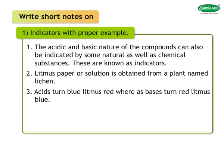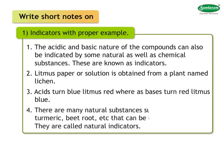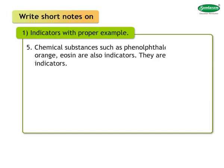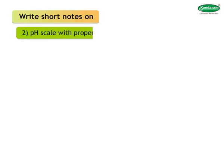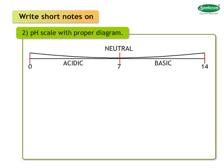Litmus paper or solution is obtained from a plant named Leachin. Acids turn blue litmus red, whereas bases turn red litmus blue. Natural substances such as rose petals, turmeric, and beetroot can be used as natural indicators. Chemical substances such as phenolphthalein, methyl orange, and eosin are synthetic indicators. A mixture of several indicators is known as a universal indicator.